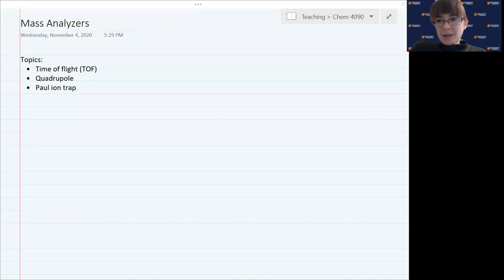Today we're going to discuss three types of mass analyzers that are commonly used for mass spectrometry. We'll discuss the time of flight, the quadrupole, and what's called an ion trap, at least one type of ion trap. The entire goal of the mass analyzer is to be able to separate charged gaseous ions according to their mass over charge ratio.